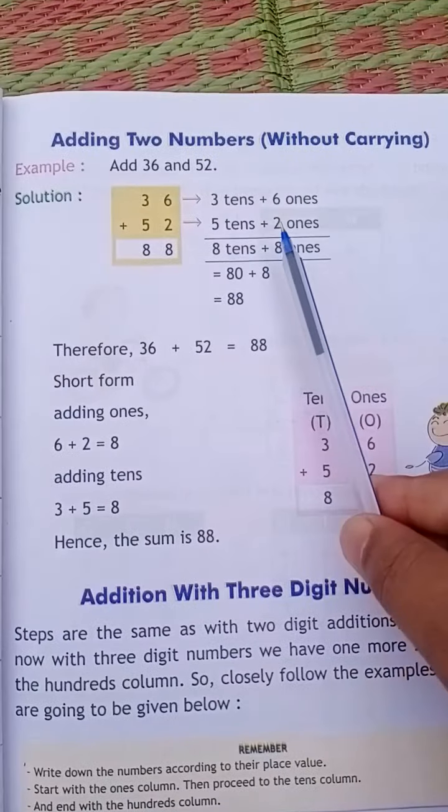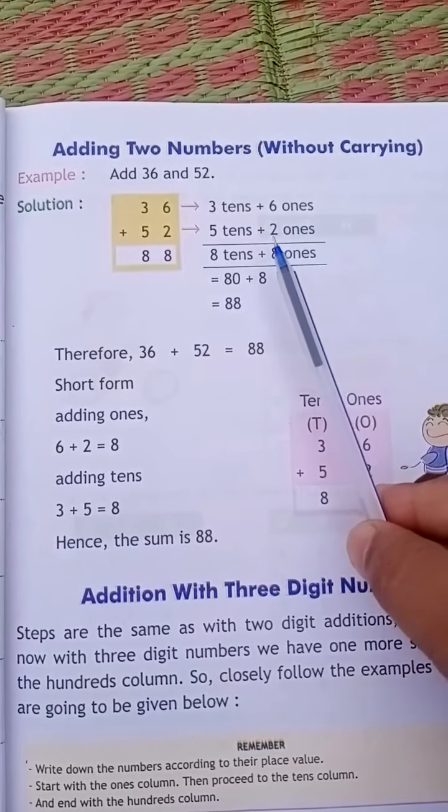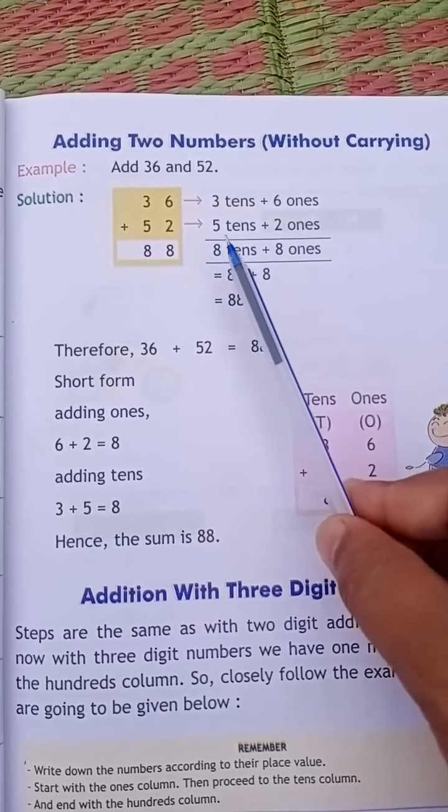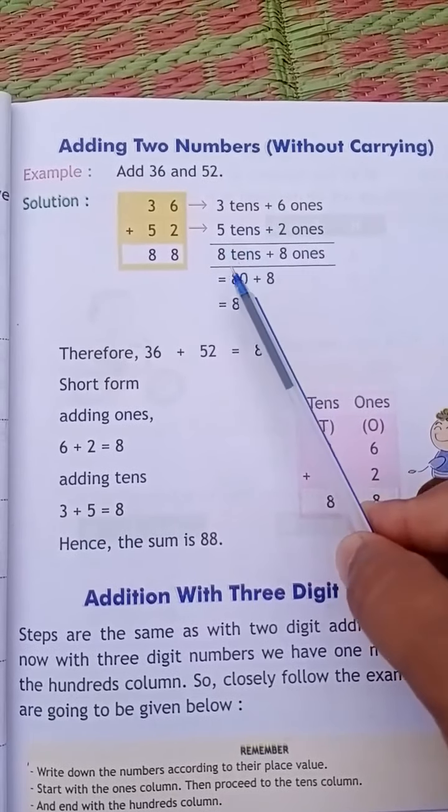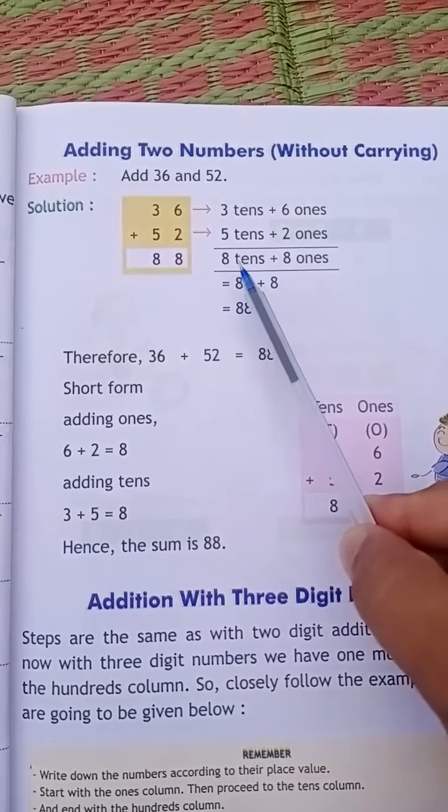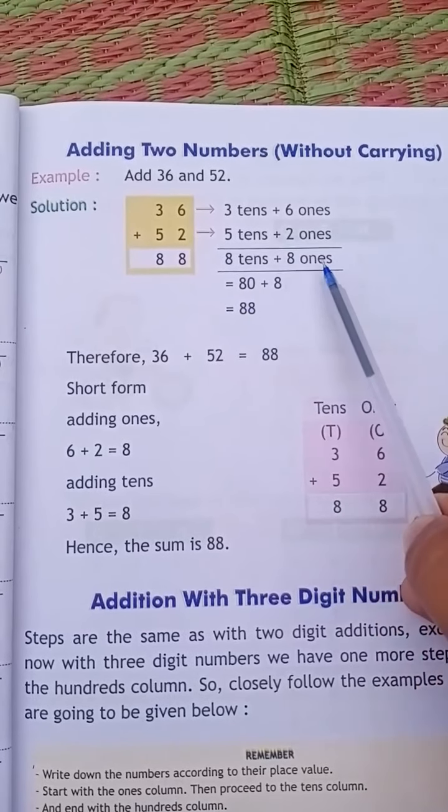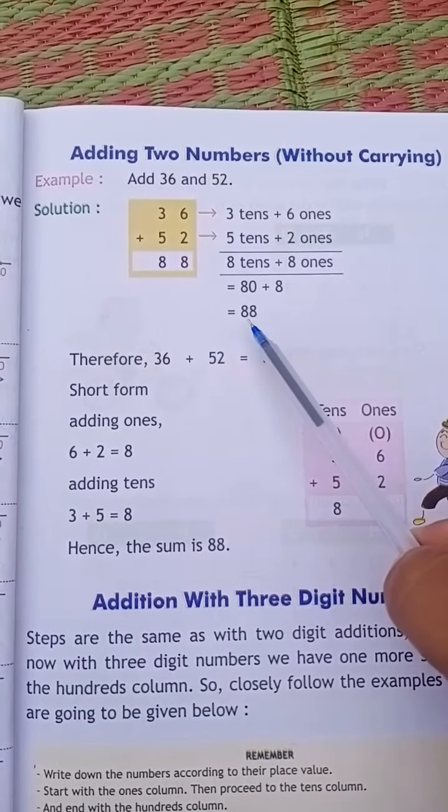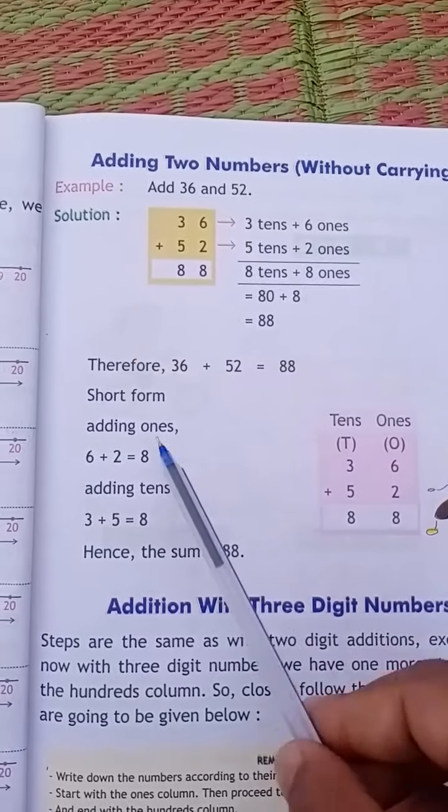Here look, 6 ones plus 2 ones is equal to 8 ones, and 3 tens plus 5 tens is equal to 8 tens. 8 tens is equal to 80, and 8 ones is equal to 8. So 80 plus 8 is equal to 88. Similarly here, 36 plus 52 means 88.